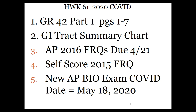Things that you would normally pick up today: you'd pick up GR42 and start working on that. The GI tract summary chart is also on my SWIFT site. We'd be picking up the 2016 FRQs, which will be due next Tuesday. You'd be self-scoring the 2015 FRQ using the scoring guide. Your new AP Bio exam date has been released for the COVID date — it's now May 18th, which gives us an extra week to help get you prepared.